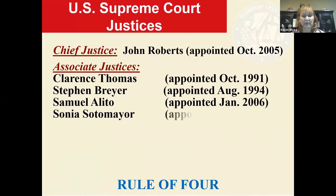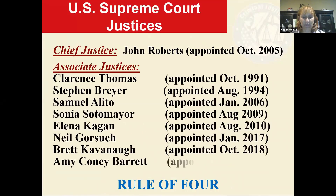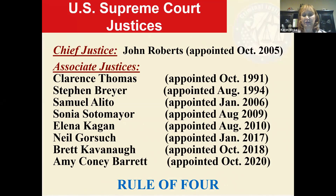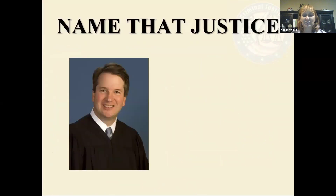Here are the current Supreme Court justices and when they were appointed. We follow the rule of four: when someone requests a writ of certiorari, at least four of the nine justices must agree to hear the case. The Supreme Court receives thousands of cases every year but only hears a couple hundred at most.